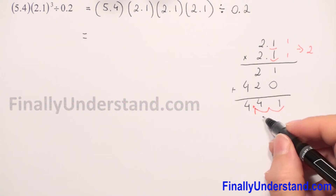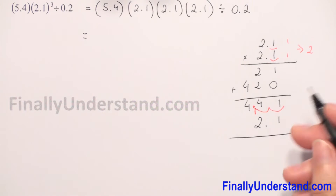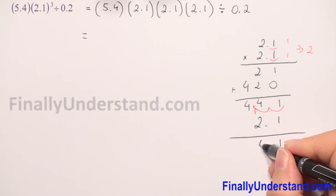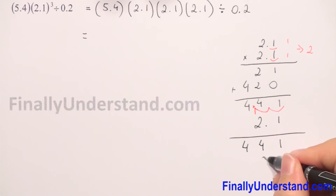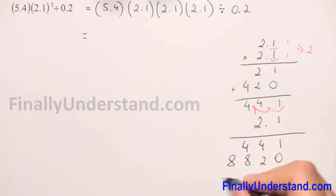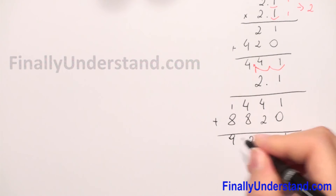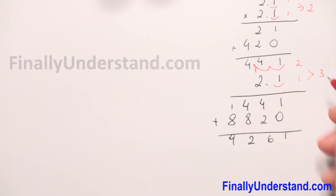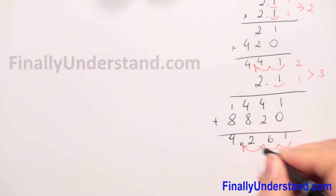Next we have to multiply our result by 2.1 again, because we have 2.1 to the third power. So let's do this. We start from the last digits: 1 times 1 is 1, 1 times 4 is 4, 1 times 4 is 4. Now 2 is in the second column so we have 20: 2 times 4 is 8, 2 times 4 is 8. Adding up: 1, 6, 12 — carry — so we get 9.261. We have 2 decimal places and 1, so 3 decimal places total. Coming from right to left, the decimal point is between 9 and 2, giving us 9.261.